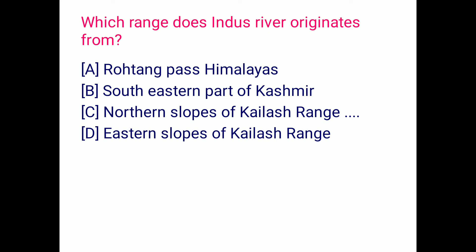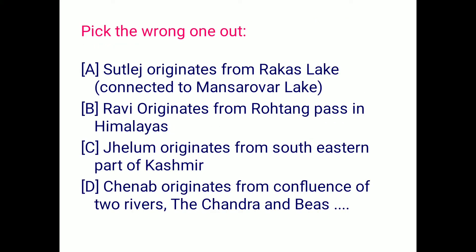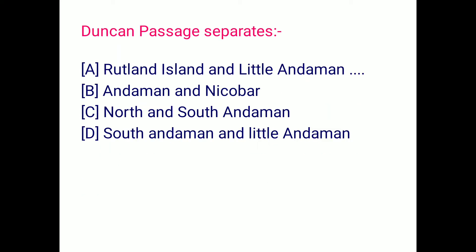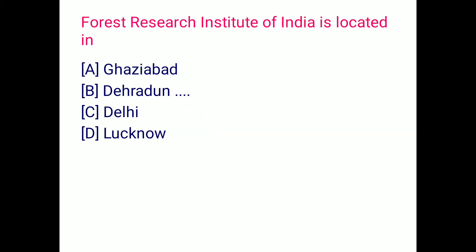Pick the wrong one. We have to find out the wrong statement. The statement that Chenab originates from the confluence of two rivers — Chandra and Beas — is wrong. Next question: Duncan Passage separates Rutland Island and Little Andaman, option A.